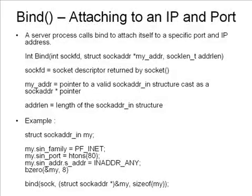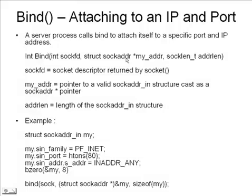Next, moving on to bind. We talked about assigning that unique address — which is a telephone number for a telephony network and an IP/port combination for our internet network. To achieve this, we call the bind call, which attaches a particular IP and port to our socket. Bind takes in a socket as input, which we created through the previous socket call, and a sockaddr structure containing the IP address and port information. Address length is the length of the data structure being passed.